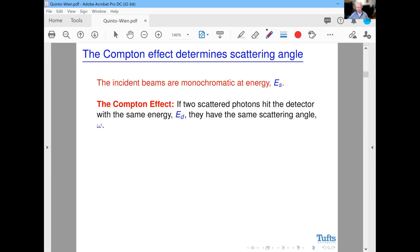The cool thing about the Compton effect is that it determines the scattering angle. Here's the Compton effect. Incident beams, remember we're assuming are monochromatic, is a fixed energy. And the Compton effect says that two scattered photons hit the detector with the same energy. Because the photons had the same energy at the start, they have the same scattering angle, let's call it omega.